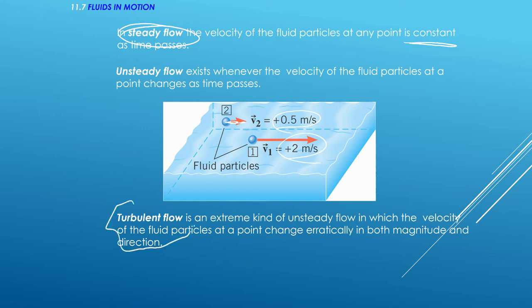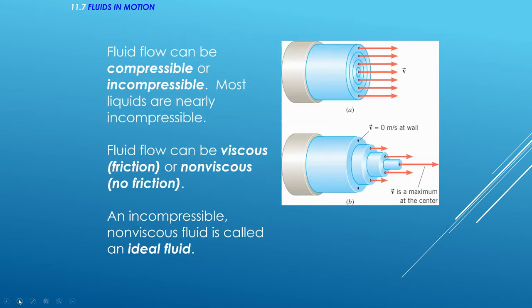And then turbulent flow. If you've ever seen turbulent flow, if you've ever seen smoke coming off of a candle, how it'll kind of come up, but it'll eventually kind of twirl into funny shapes, this is because we have an extreme kind of unsteady flow in which the velocity of the particles change. We're going to deal with steady flow.